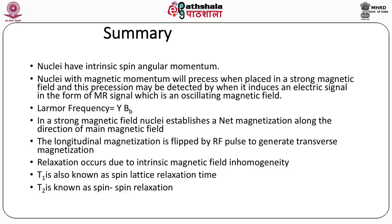To summarize this lecture: nuclei have intrinsic spin angular momentum. Nuclei with a magnetic moment will precess when placed in a strong magnetic field, and this precession may be detected as an MR signal — an oscillating magnetic field induced electrically. The Larmor frequency is the product of the gyromagnetic ratio and B0, the main magnetic field. When the patient is placed in a strong magnetic field, the nuclei establish a net magnetization along the direction of the main magnetic field — called longitudinal magnetization. This longitudinal magnetization is flipped using a radio frequency pulse to generate transverse magnetization. After switching off the RF pulse, relaxation occurs. Due to loss of phase coherence, we get T2 relaxation time, and the return of excited nuclei to their original state gives us T1 relaxation time.